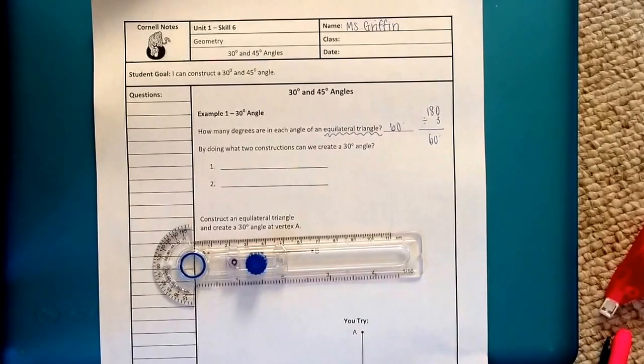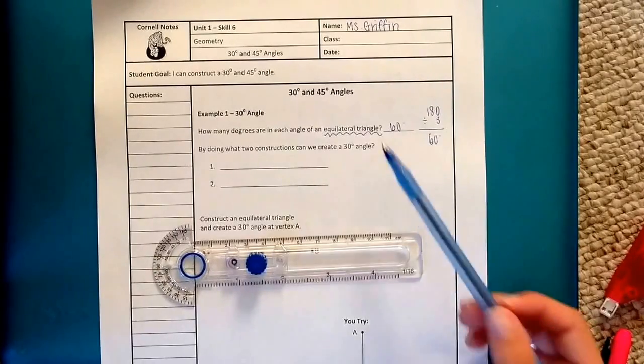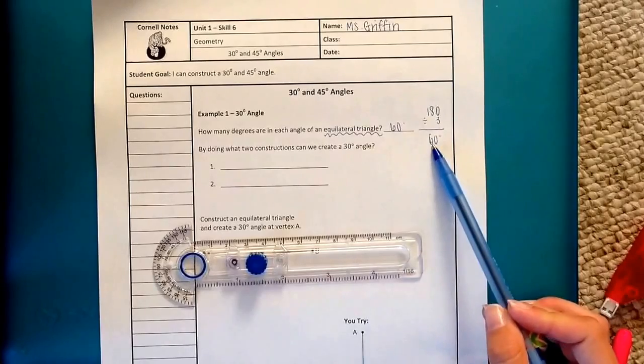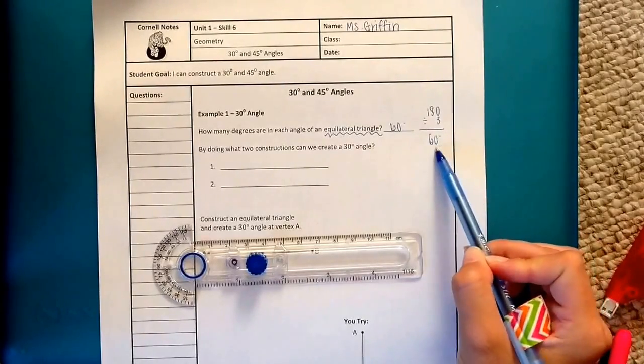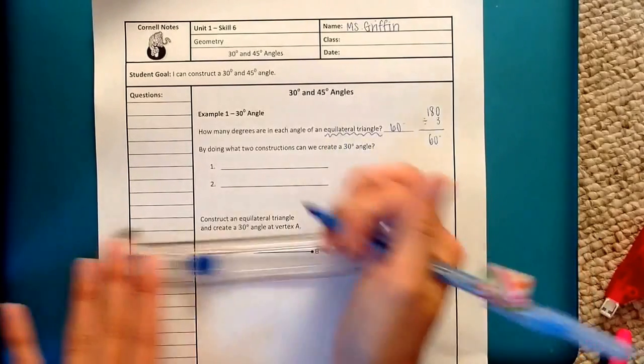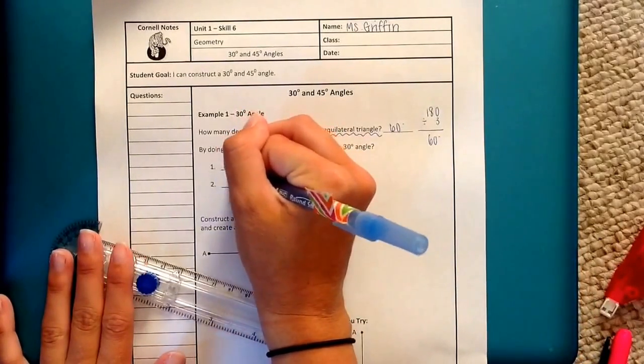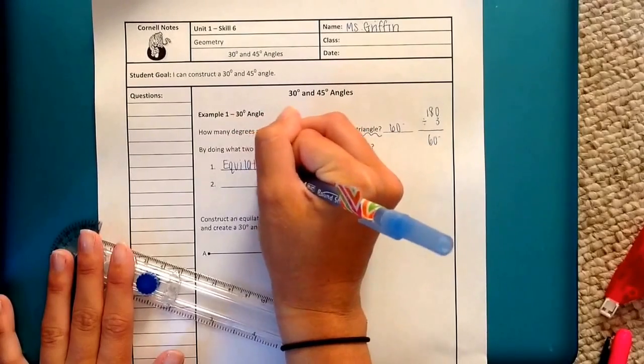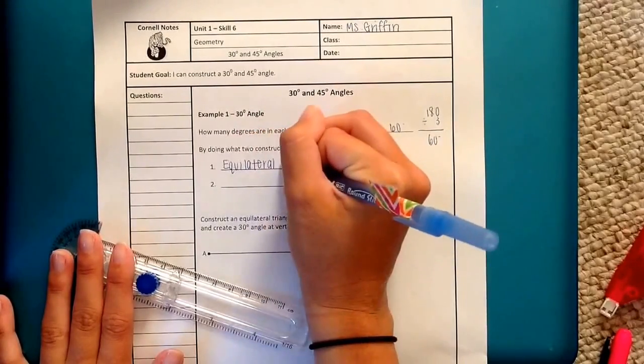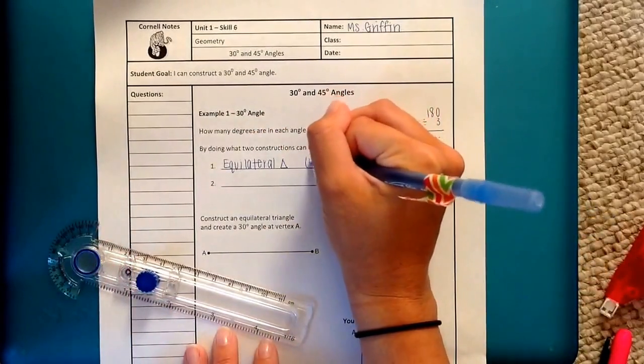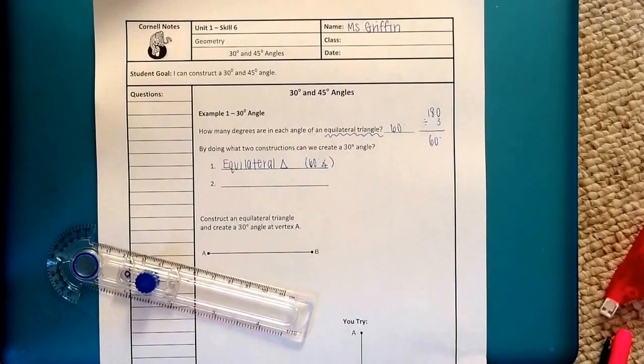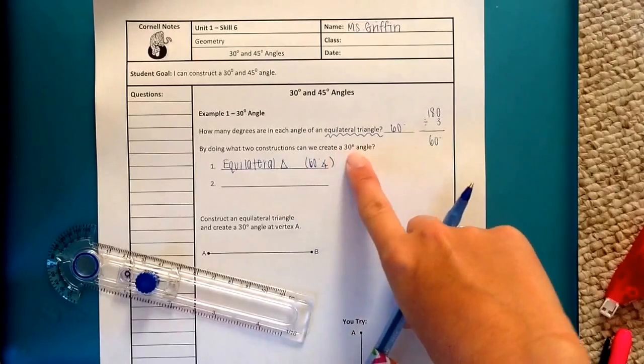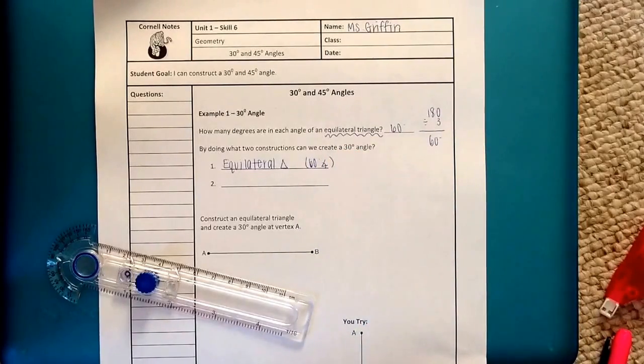So the next part says by doing what two constructions can we create a 30 degree angle? If you think about it for a second we have 30 coming from potentially 60. So we know that we can get a 60 degree angle by creating an equilateral triangle. That's the first construction we'll have to do, and that's going to give us the 60 degree angle.